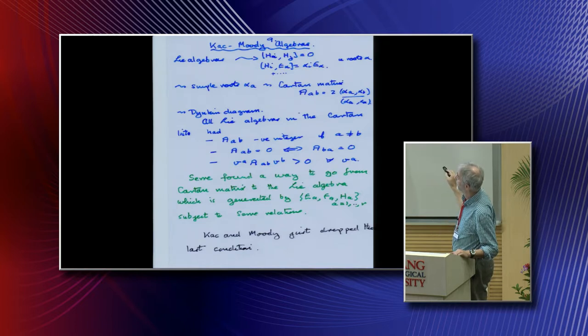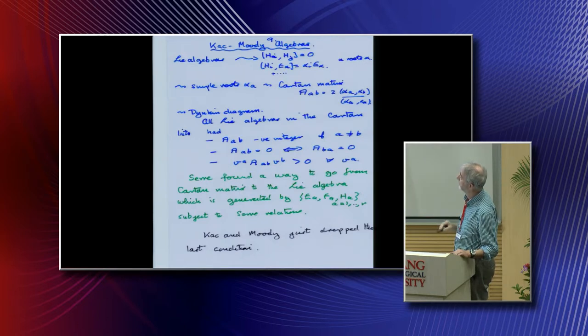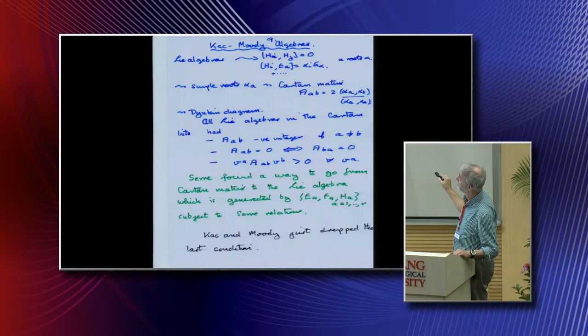These mathematicians had all these groups, they followed this procedure, and they came out with a set of Cartan matrices. When they looked at these matrices, Killing did all this, A, B, C, D, E. Obviously the diagonals are two, and they're negative integers off the diagonal. The zeros are symmetric, and these matrices here are positive definite.